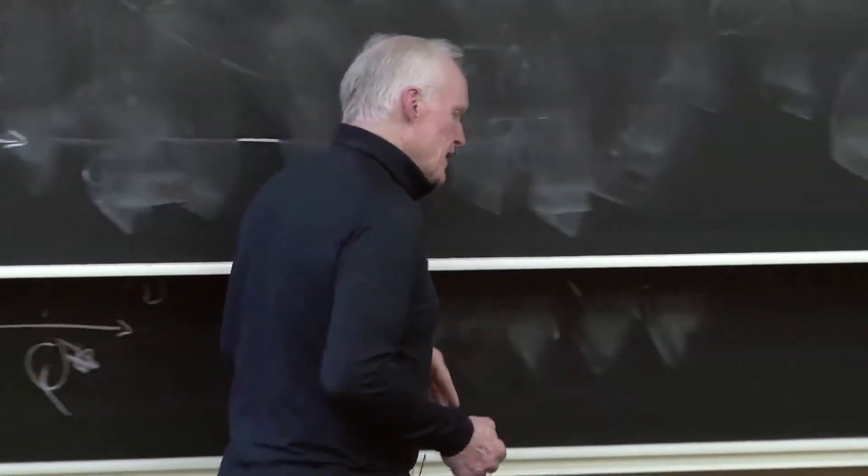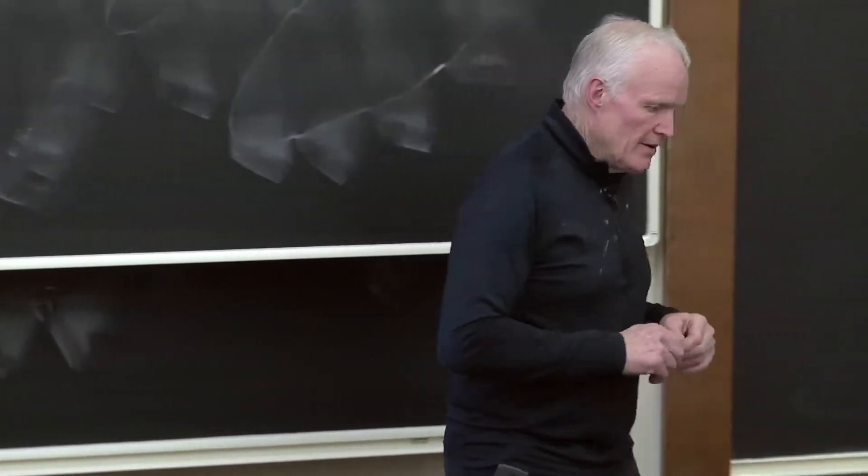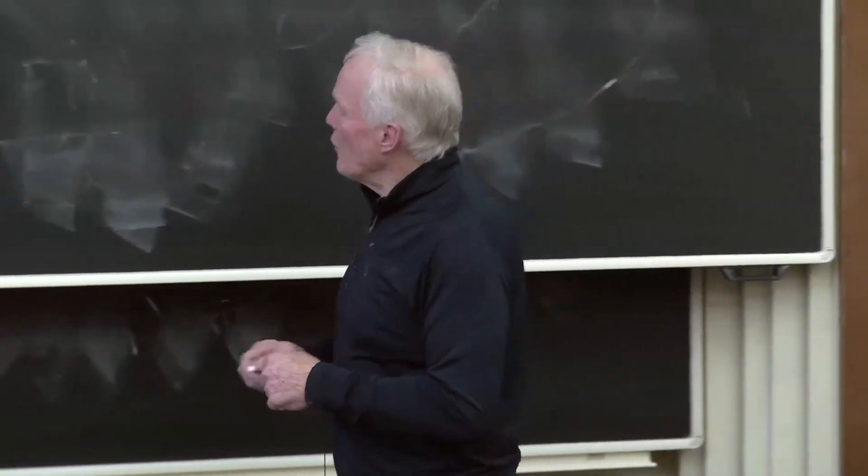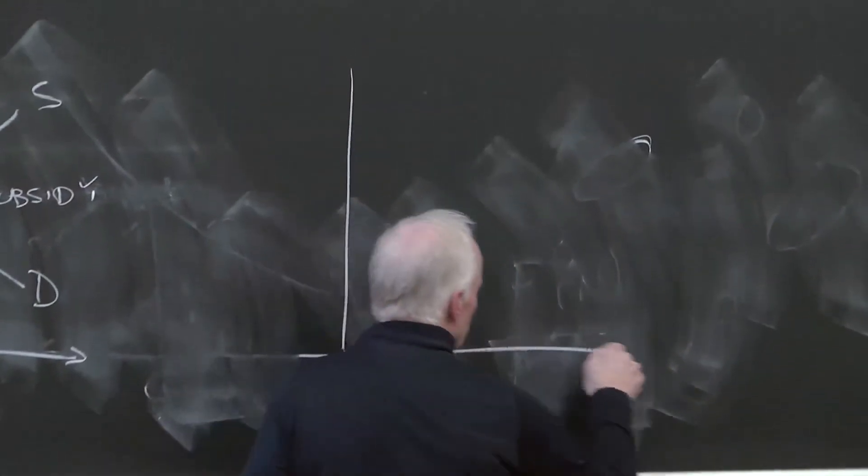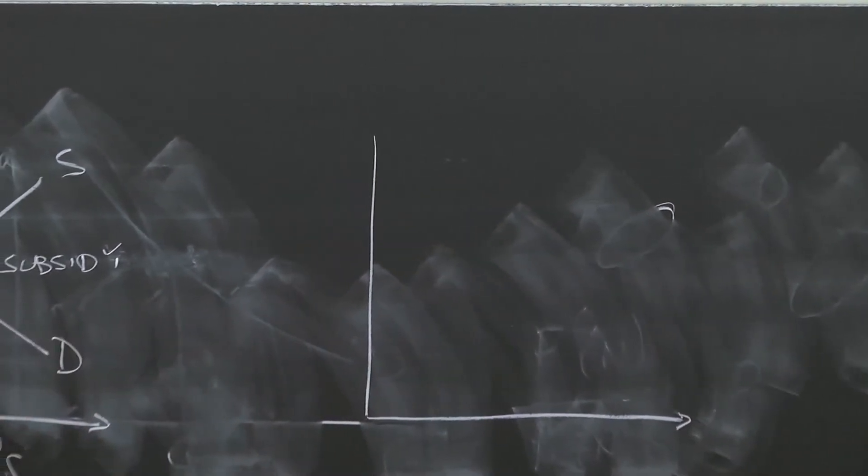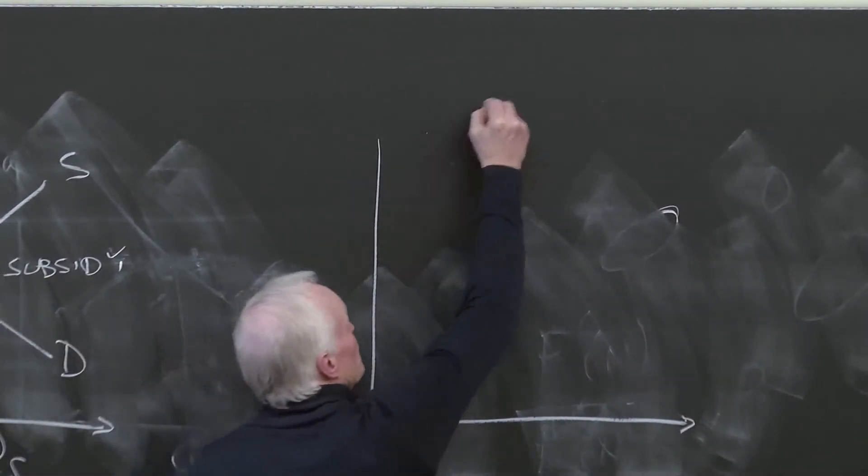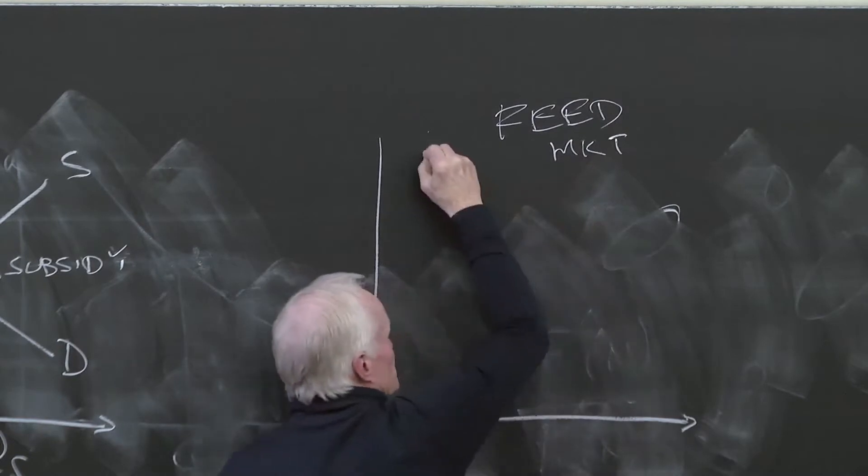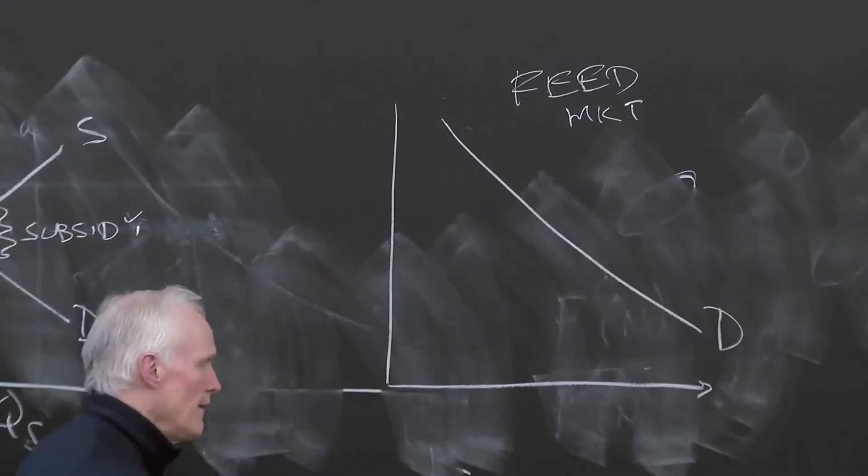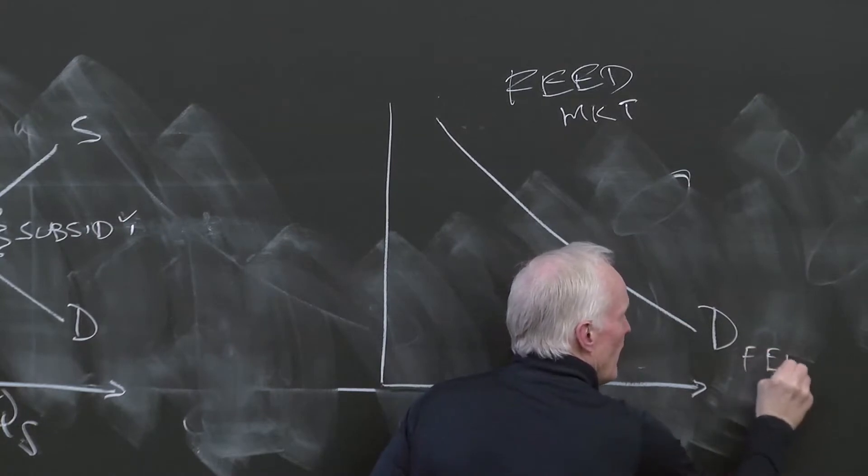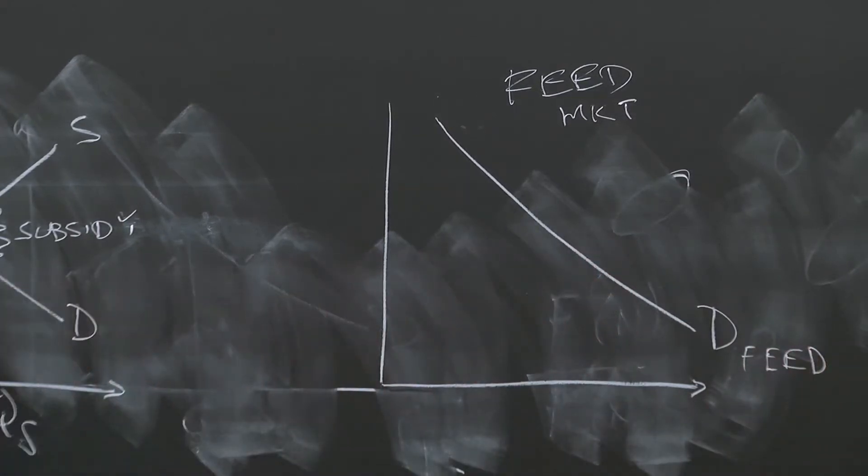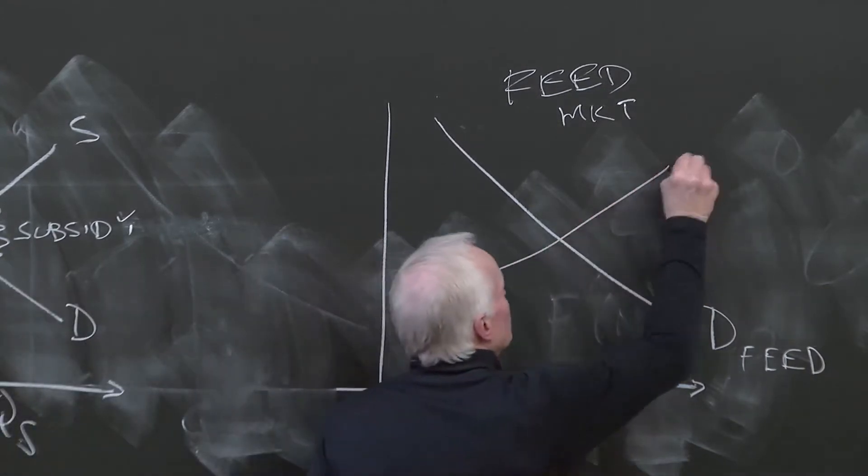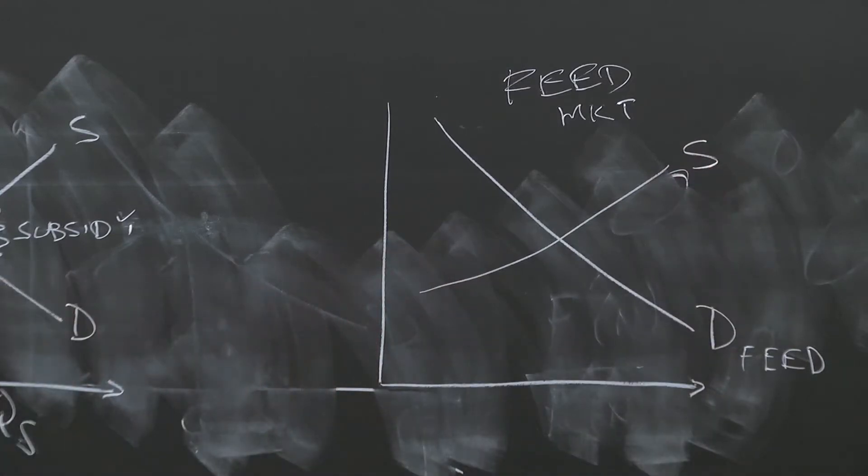Okay. So how are we going to analyze that? Let's think about corn being used for two things. Corn is used to feed cattle, pigs and everything else, used mostly as an animal feed. So this is the feed market. And there's some demand for corn in the feed market. Let's assume prior to the ethanol introduction, we have a supply and demand equilibrium in this market.